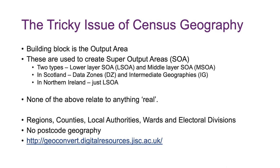Scotland has slightly different thresholds for output areas because the Scottish population is very sparse in the north — in Scotland it's a minimum of 50 people, whereas in England it's a minimum of 100. Output area geographies also change slightly with every census because the population changes and where it lives changes, though they're designed to stay as similar as possible to the previous census.